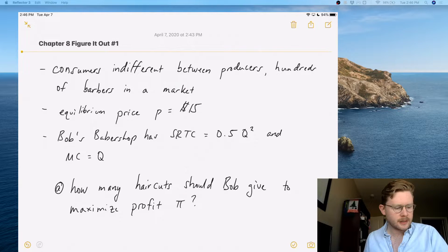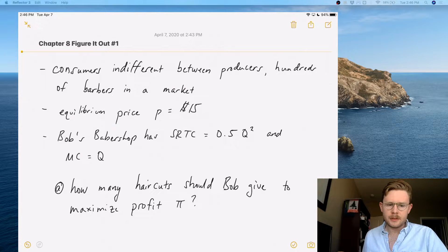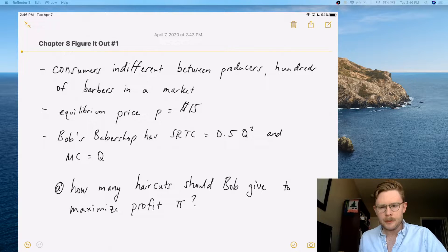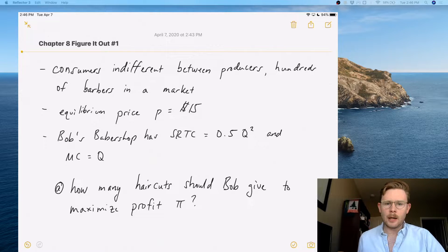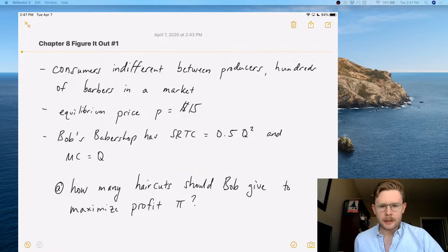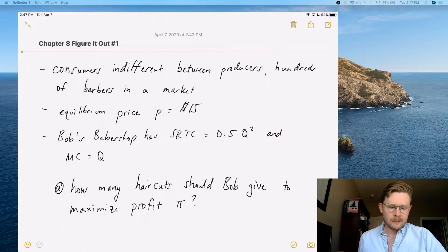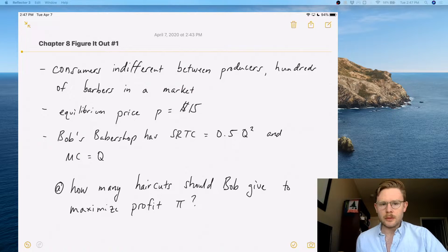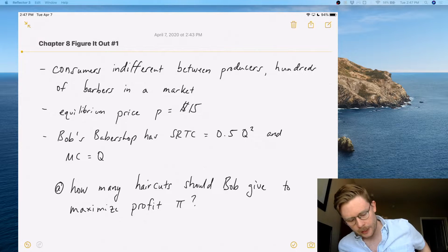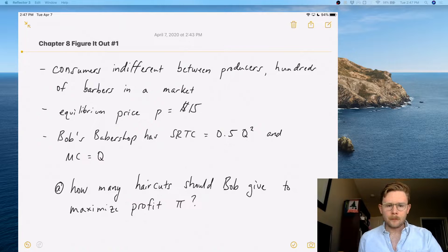Okay, so this is the first Figure It Out question for Chapter 8. This one is super simple. The primary things that you have to remember here is that in the perfectly competitive market, the marginal revenue equals price, and you have to remember that profit equals total revenue minus total costs.